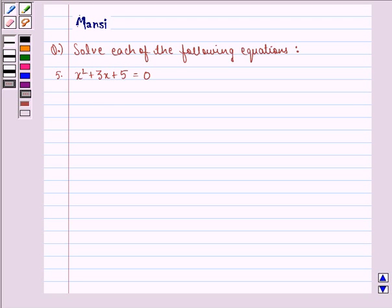Hello and welcome to the session. My name is Mansi, and I'm going to help you with the following question. The question here says: solve each of the following equations. The fifth equation is x² + 3x + 5 = 0.